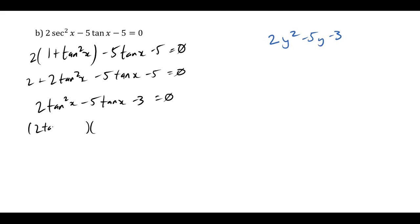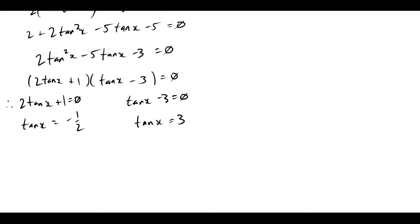So this is going to be 2 tanx and this is going to be 1 tanx and this is going to be minus 3 and plus 1. Okay, so I get 2 tanx plus 1 is 0 or tanx minus 3 is 0. So tanx is negative 1 half and tanx is 3.